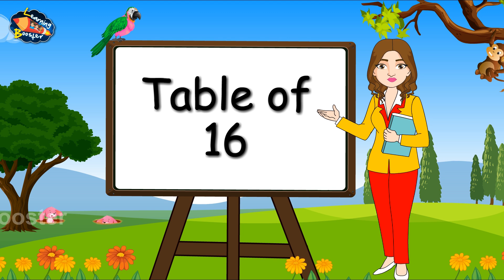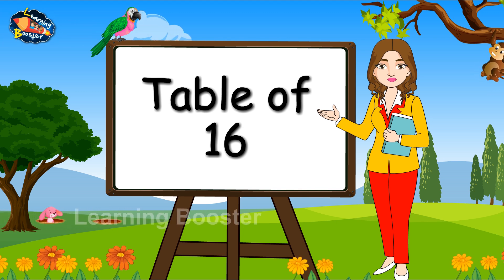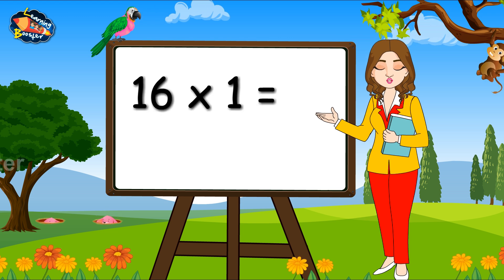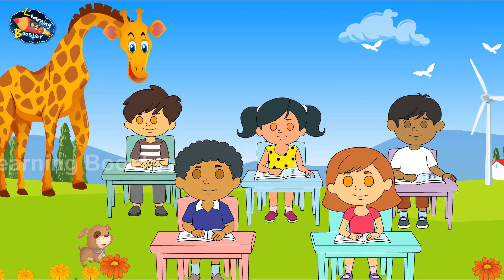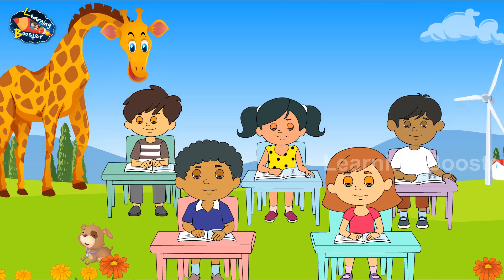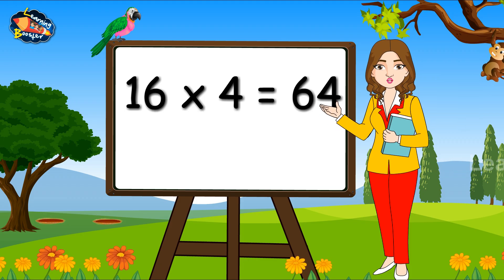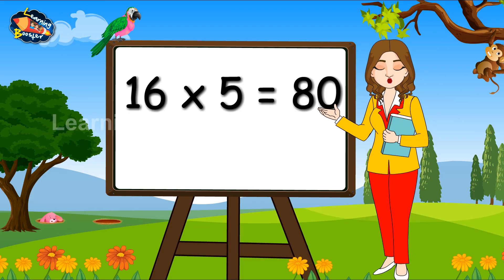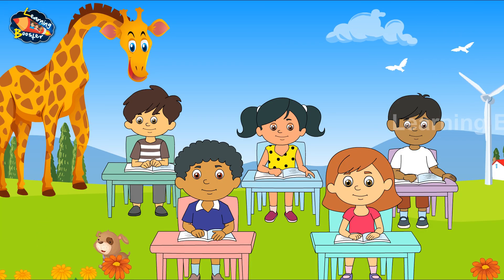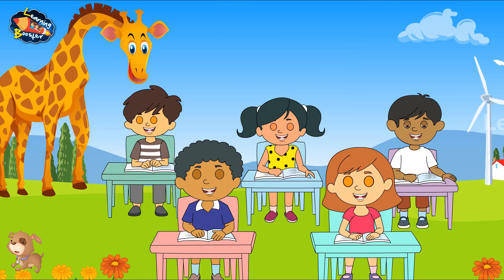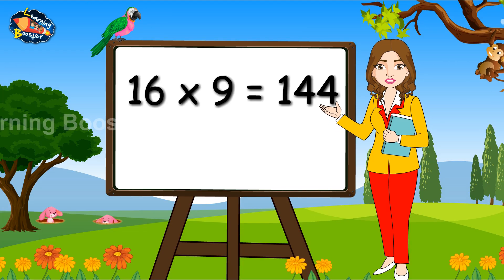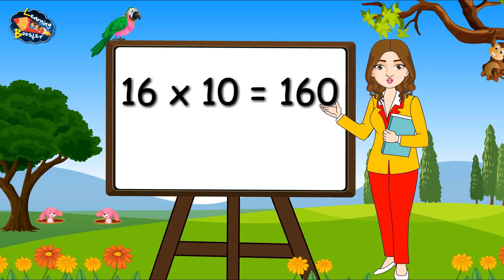Table of Sixteen. Sixteen ones are sixteen. Sixteen twos are thirty-two. Sixteen threes are forty-eight. Sixteen fours are sixty-four. Sixteen fives are eighty. Sixteen sixes are ninety-six. Sixteen sevens are one hundred and twelve. Sixteen eights are one hundred and twenty-eight. Sixteen nines are one hundred and forty-four. Sixteen tens are one hundred and sixty.